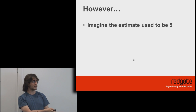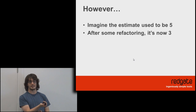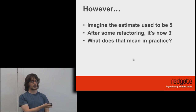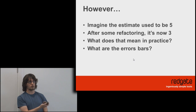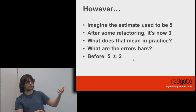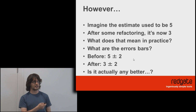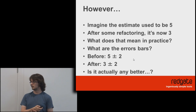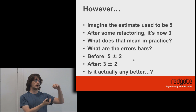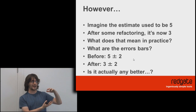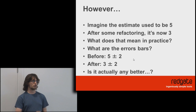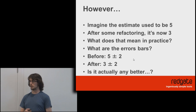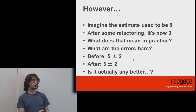The real problem with this approach is: imagine the estimate used to be 5, we do some refactoring and it's now 3 — but what does that mean in practice? Have we actually reduced technical debt? What are the error bars? If it's 5 plus or minus 2 and it's 3 plus or minus 2, has the code actually got any better? You inherit all the problems that come from estimating. So you can't really use it to be quantitative, but you can use it to be qualitative — it would reduce it, but by how much is hard to say.